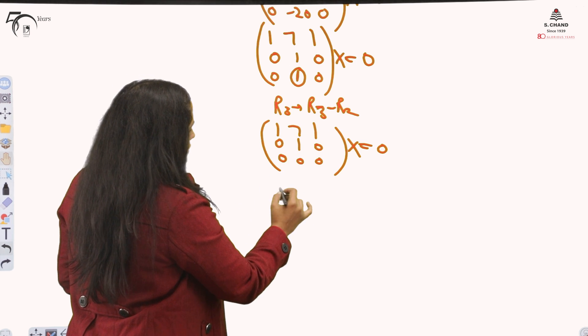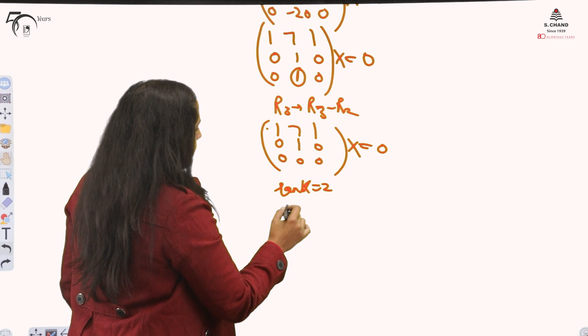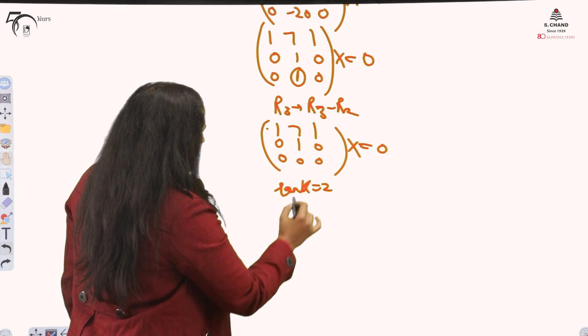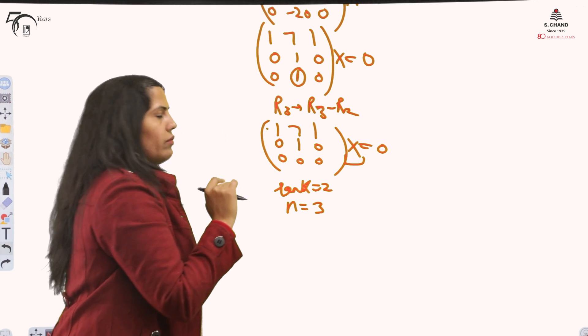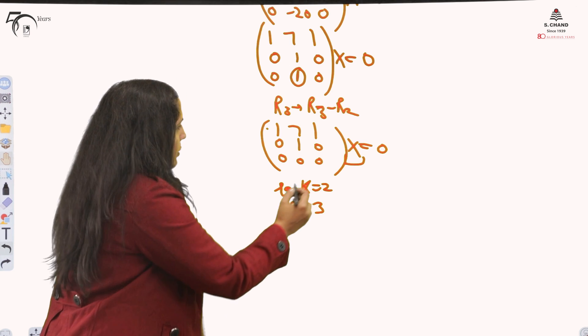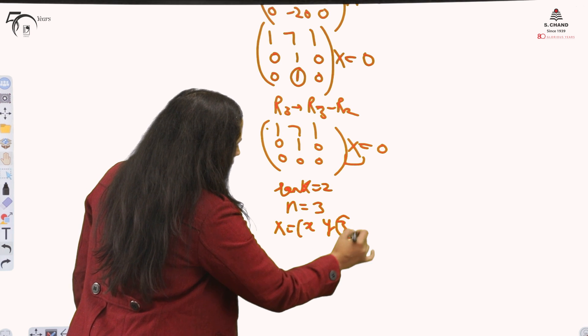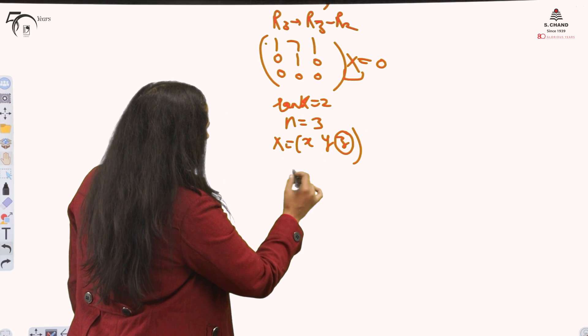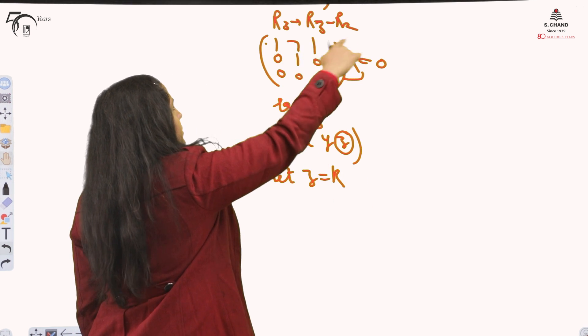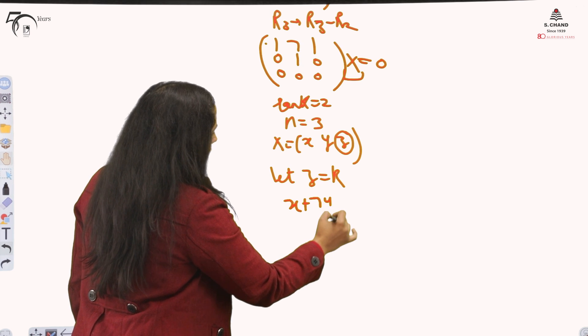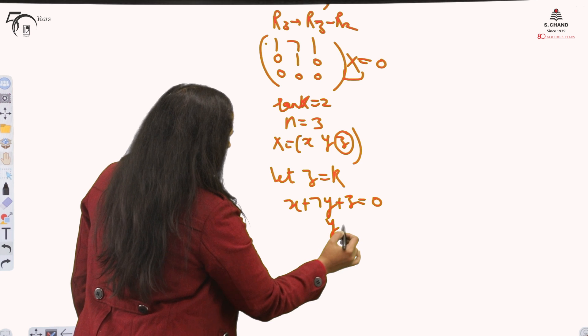Now, the rank of this matrix is how much? 2, because 2 non-zero rows. So rank is 2. If rank is 2 and how many unknowns? 3. So it means any one value you can give randomly. I am taking suppose my x is x, y, z. So I am taking z as any number k. Let z equal k. Now simplify this.